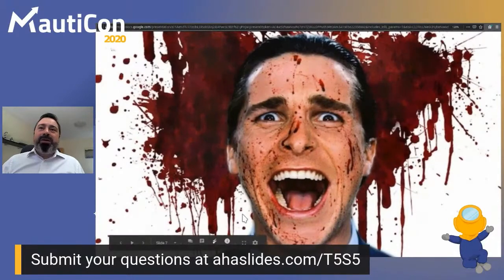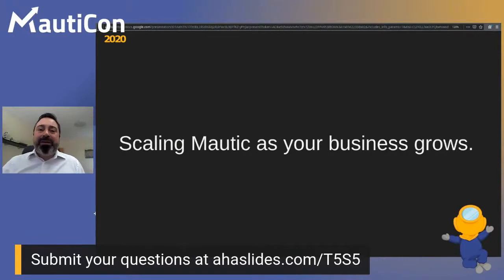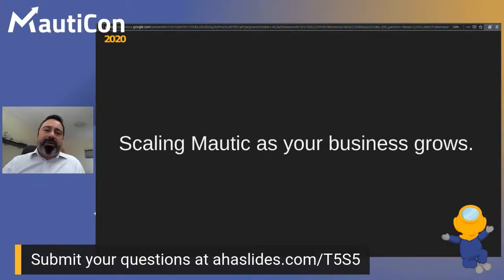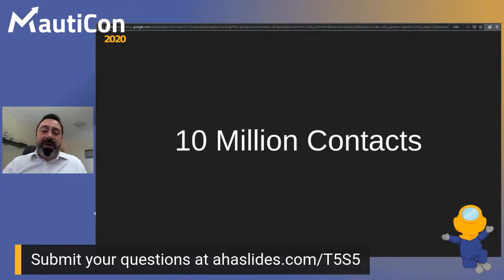This presentation is about scaling MAUTIC as your business grows, and also if you already have a big business and are trying to decide if MAUTIC is a good choice. So, how many contacts can MAUTIC run in just one instance? 10 million contacts. How do I know? Because I've been asking around for a long time and no one seems to have a bigger instance than that, and since I manage one 10-million-contact instance, I know for a fact that 10 million is something it can do.